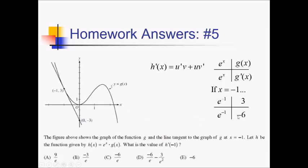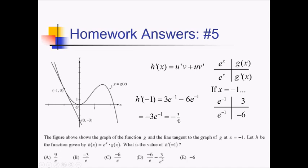Using the ribbon to put it back together, I've got 3e to the negative 1, and since g prime is negative 6, minus 6e to the negative 1. These are like terms, so I subtract to get negative 3e to the negative 1. Applying the negative exponent rule, that's negative 3 over e, which is answer choice B.